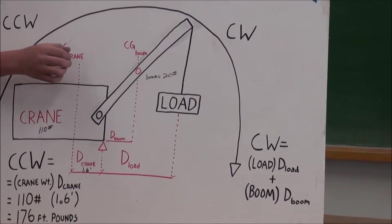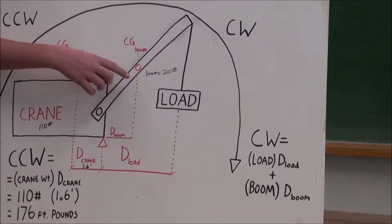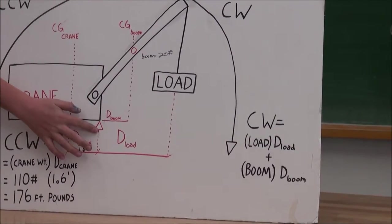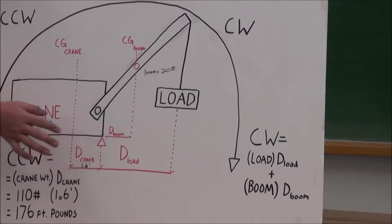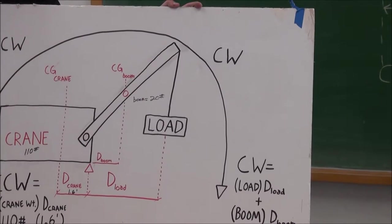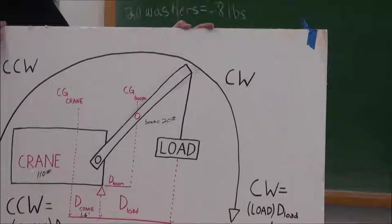And then the center of gravity of the boom—the weight of the boom and then measuring the distance from the center of gravity of the boom to the pivot point. And then add those two foot pounds numbers together to find out the total foot pounds of that part of the equation.